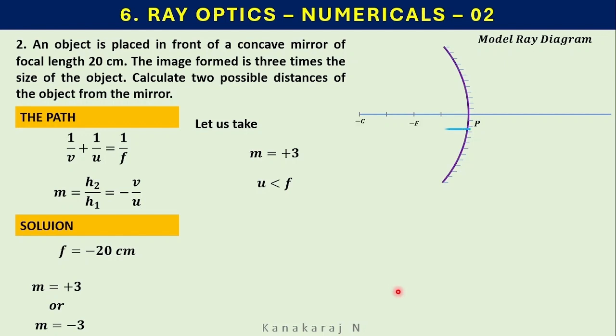We fix the object at a distance minus u which is less than the minus f. AB is the object. A ray starts from the head, goes and hits the mirror then it passes through the focus. Then another ray passes through the center of curvature and the head of the object meets the mirror, retraces the path. These two rays are diverging rays. They never meet.